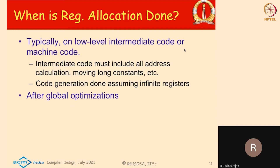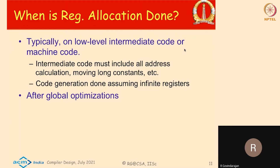To a certain extent, register allocation is done after machine-dependent optimizations as well. Many of these compiler passes have to be run repeatedly — for example, you do machine code generation, machine-dependent optimizations, register allocation, instruction scheduling, and maybe another level of local register allocation, then possibly another level of machine-dependent optimization. Roughly, register allocation is done after code generation and after machine-dependent optimizations.